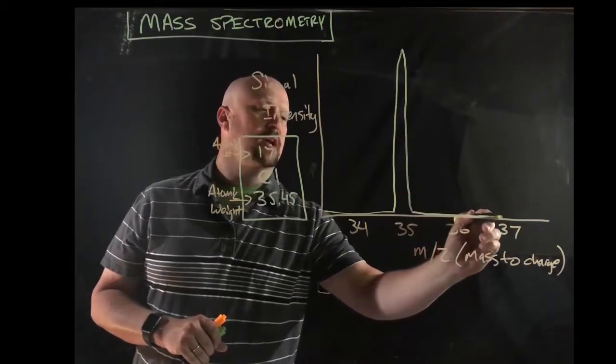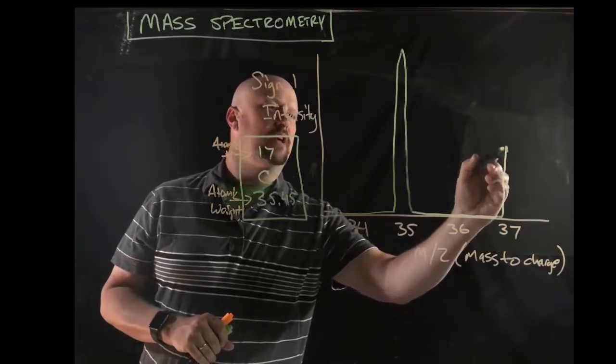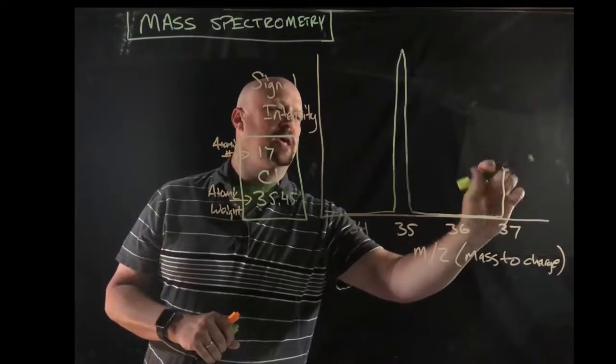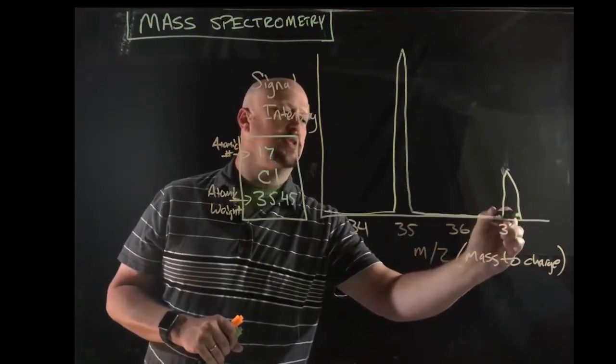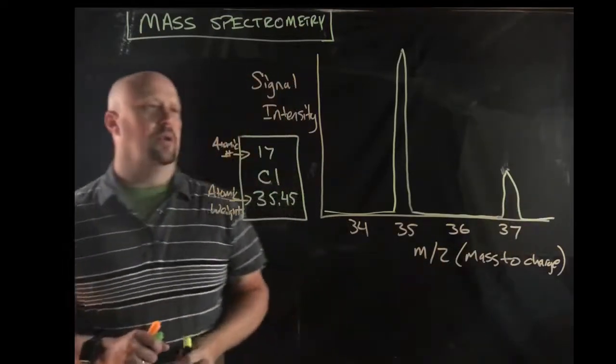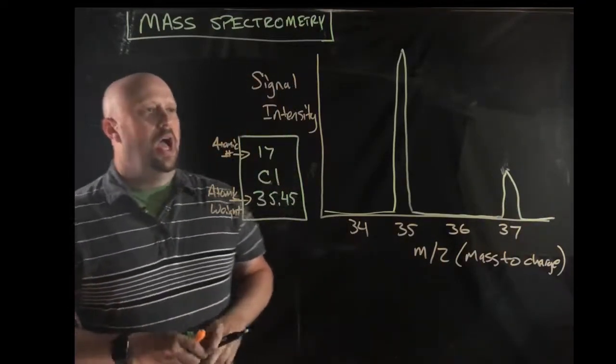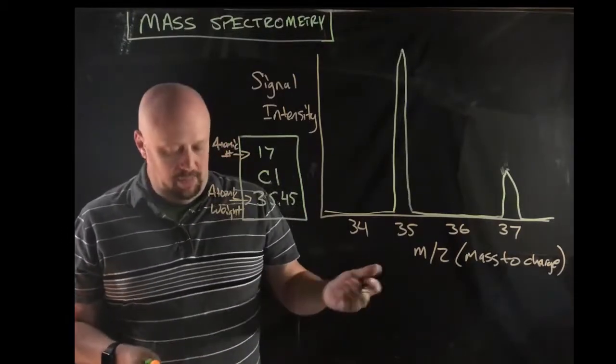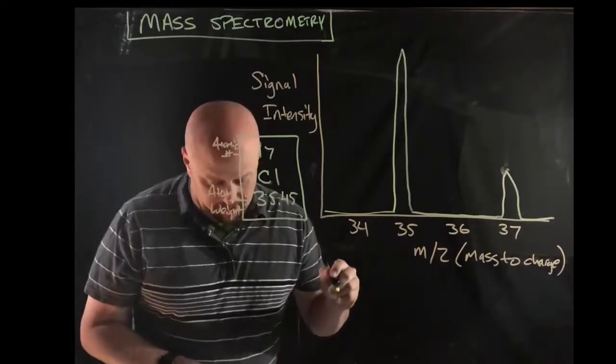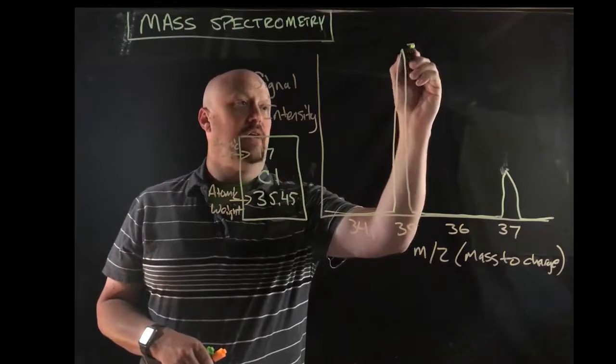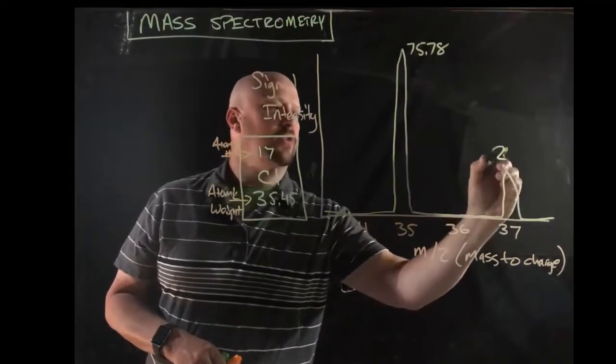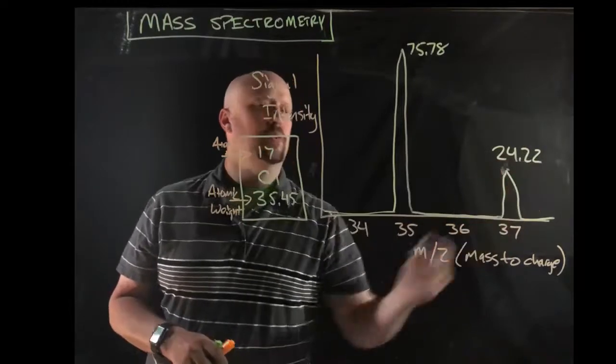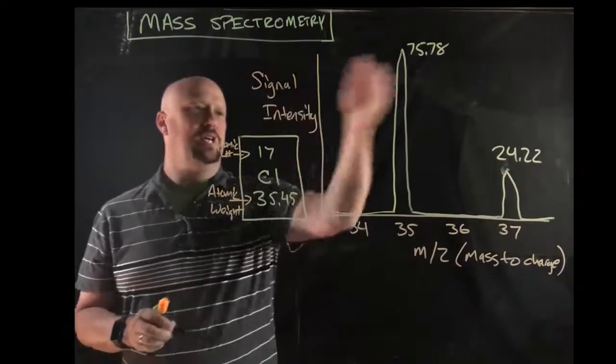Then there'd be like a little baseline here. And then at 37, we'd get a peak that was about a third of the size of the other one. And if we wanted to put some specific numbers to that, what we would actually have, let me grab the specific numbers because I wrote them down, is we'd get 75.78, 24.22. That's signal intensity.